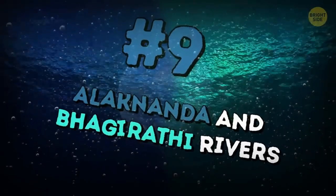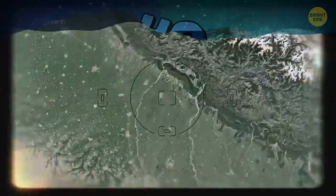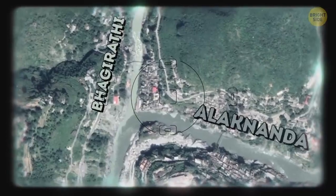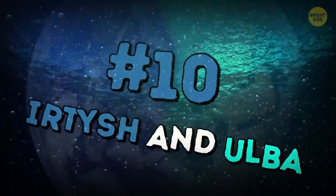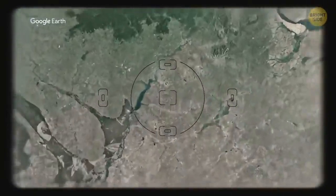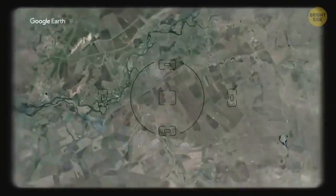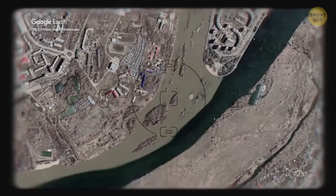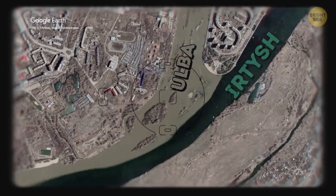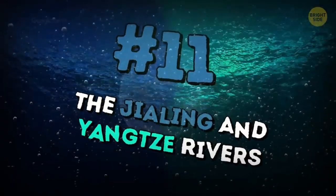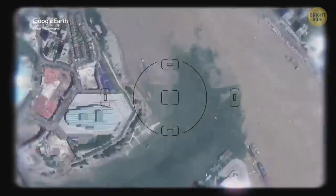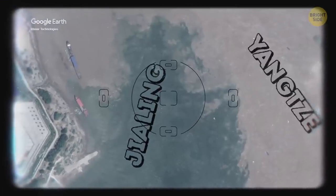Alaknanda and Bhagirathi rivers meet in India. Alaknanda is dark and Bhagirathi is light. Irtysh and Ulba flow into each other in Kazakhstan, near a city whose name you'll never be able to pronounce. The Irtysh has clean water and Ulba cloudy. The Jialing and Yangtze rivers meet in Chongqing, China. The Jialing is clean and the Yangtze is brown.